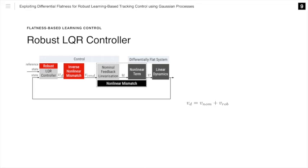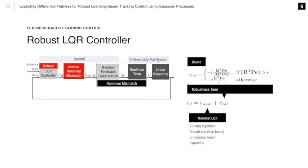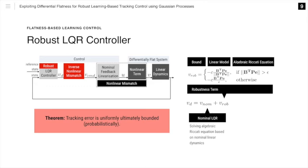We can then design a robust LQR controller by combining a nominal LQR, found by solving the algebraic Riccati equation based on the linear dynamics, with a robustness term. The robustness term is dependent on the variable bound C, matrix B from the linear model, and matrix P found from the algebraic Riccati equation. Combining this robust controller with the learned inverse, we can show that the tracking error is uniformly ultimately bounded.